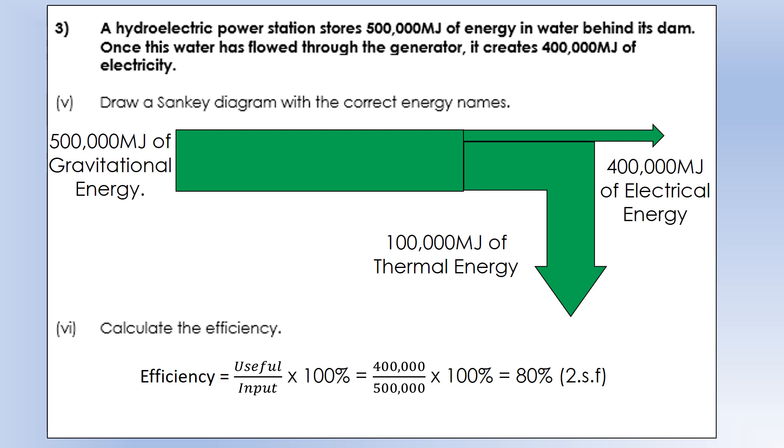The efficiency is going to be pretty high. 400,000 divided by 500,000 gives us 80% efficiency of transfer. So that's pretty good.